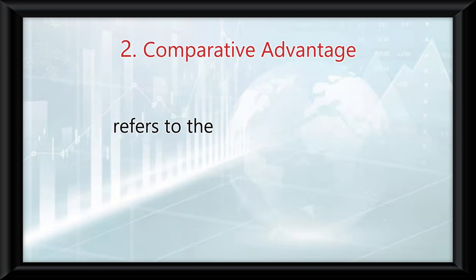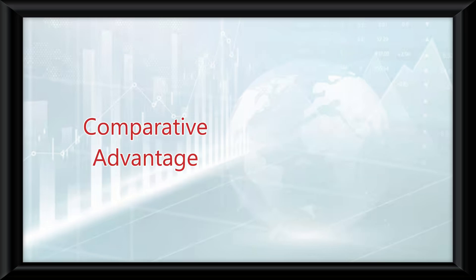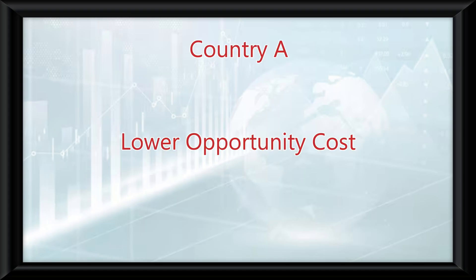Comparative advantage refers to the ability to produce a good or service at a lower opportunity cost than another producer. This is more important in determining the benefits of trade rather than absolute advantage. Even if country A is better at producing both cars and computers, if it has a lower opportunity cost for producing cars than computers compared to country B, it should specialize in cars.